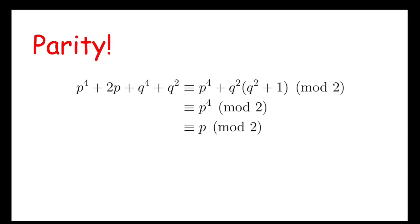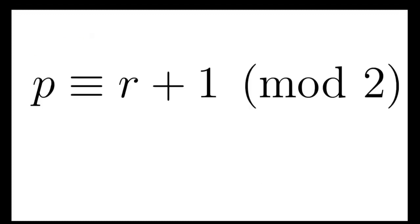Now, for the right-hand side, I can do similar things, and I will get the polynomial to be congruent to r + 1 mod 2. Now, because both sides are equal, I can deduce that p is congruent to r + 1 mod 2, which means p and r are of different parity.